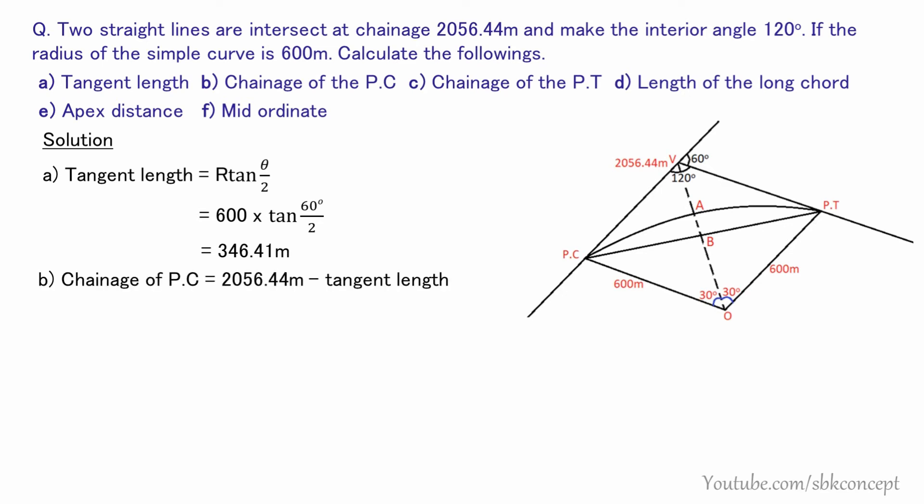Second, we need the chainage of the PC. The chainage of the point of intersection is given as 2056.44 meters. The chainage of the PC equals the chainage of the PI minus the tangent length: 2056.44 − 346.41 = 1710.03 meters.